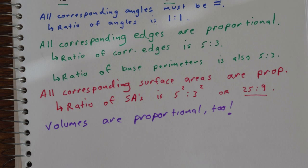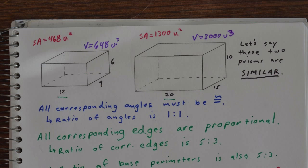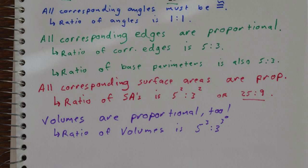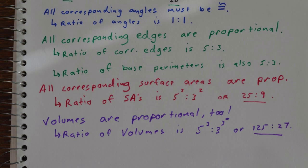So volumes are proportional as well. If we look at the volume of these two prisms and then take their ratio, 3000 divided by 648, it's quite a large fraction, but that fraction ends up being 125 to 27, which again is related to 5 to 3. In fact, it's 5 to the third power to 3 to the third power.